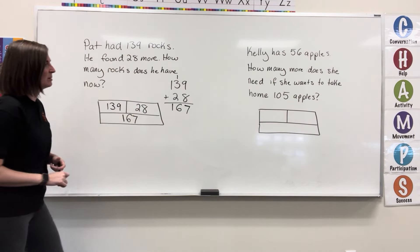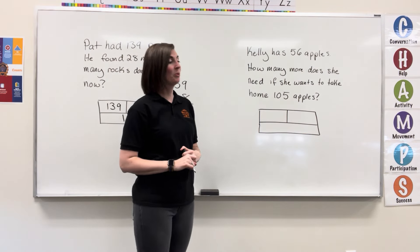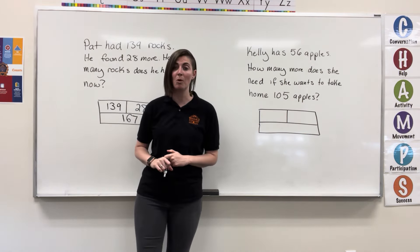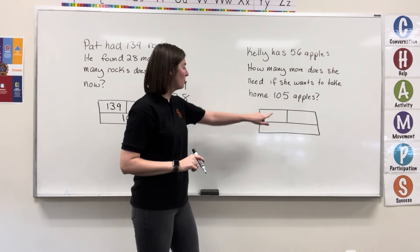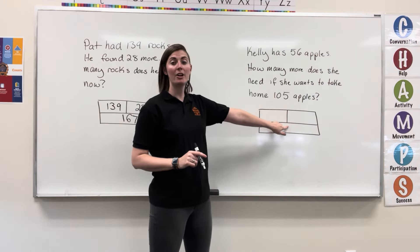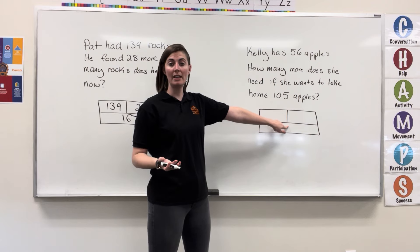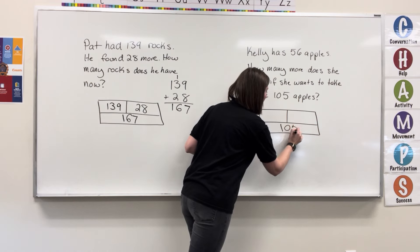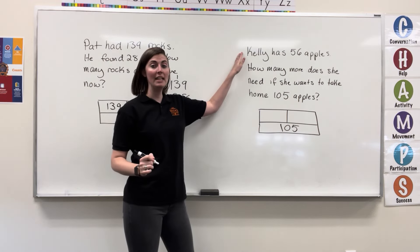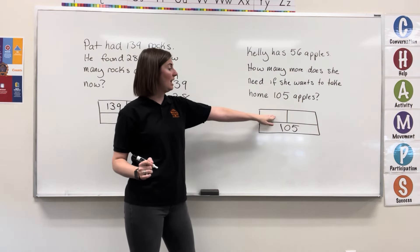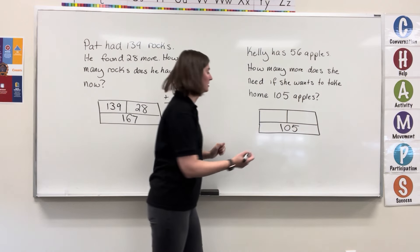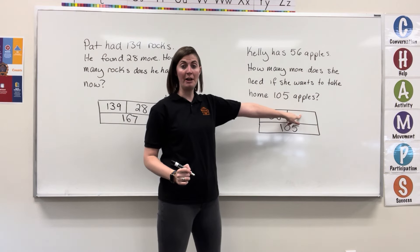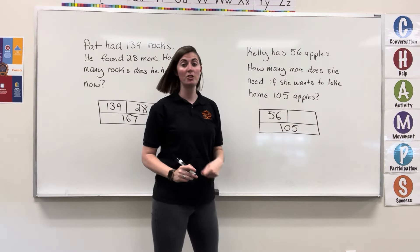Let's look at a different example. In this one, Kelly has 56 apples. How many more does she need if she wants to take home 105? So remember, this is a part, part, and our total. We know that Kelly wants to take home 105 apples, so that's going to be our ending amount. She already has 56 — she already has one of the parts. So 56 plus a certain amount more will get us to 105.